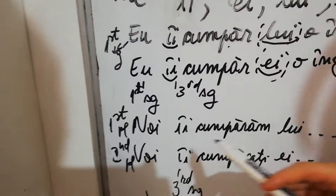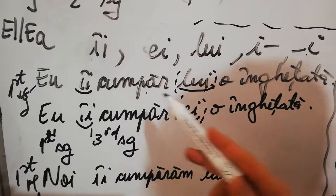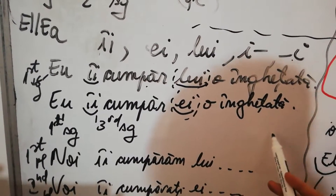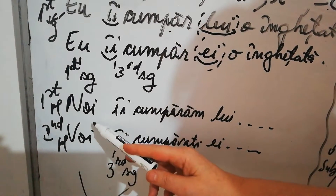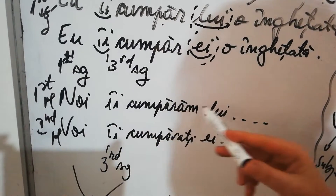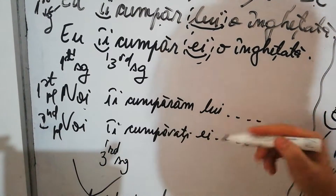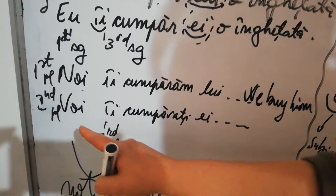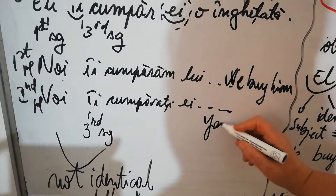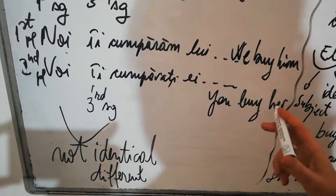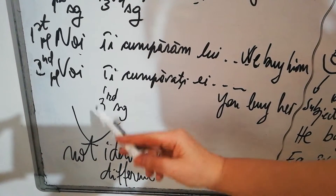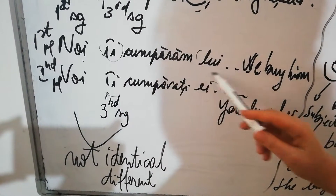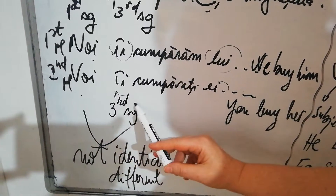Now let's go to the plural. For the first person plural, the personal pronoun in dative: 'Noi îi cumpărăm lui' - we buy him an ice cream. As you can see, they are not identical here - 'noi' is first person plural, the indirect object is third person singular. When they are not identical, they are personal pronouns. 'Îi' and 'lui' here are personal pronouns because the subject and indirect object are not the same.